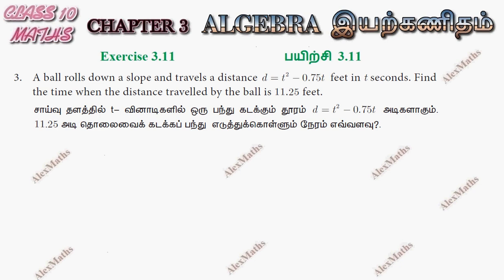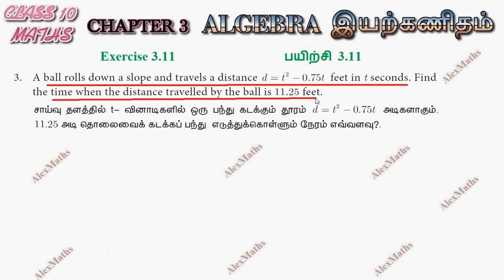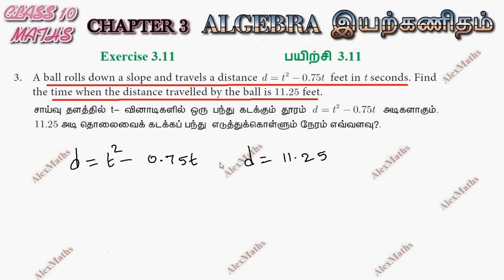Hi students, this is Alex here. Exercise 3.11, question number 3: a ball rolls down a slope and travels a distance. The distance equation is d equal to t squared minus 0.75t, in t seconds. We need to find the time when the distance traveled by the ball is 11.25 feet.